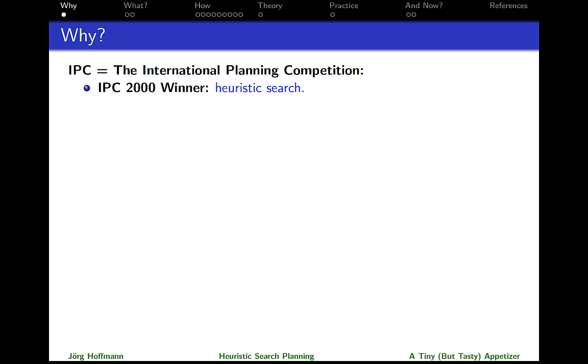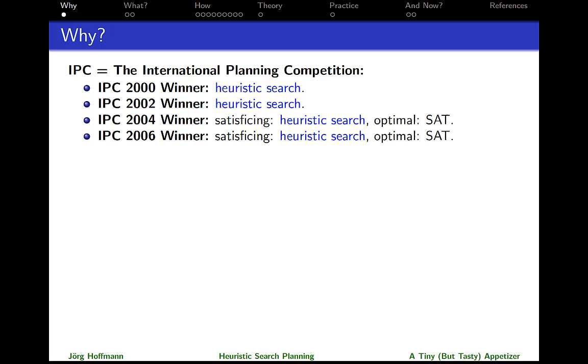We followed a two-year cycle, so the next competition is in 2002, same picture. Two years later, same picture, except that as of this time point, we were separating satisficing planners from optimal planners. In optimal planning, you are forced to give a guarantee that the plan you return is among the best possible plans. Satisficing planning traditionally attracts the largest competition, and that was won by heuristic search. Next competition, same picture. Next competition, same picture.